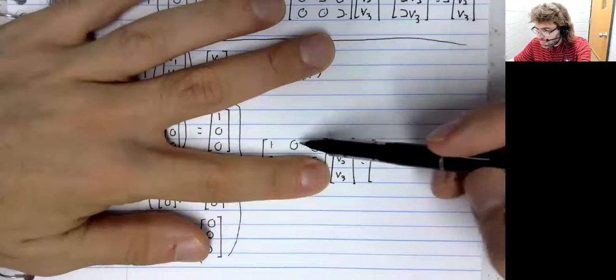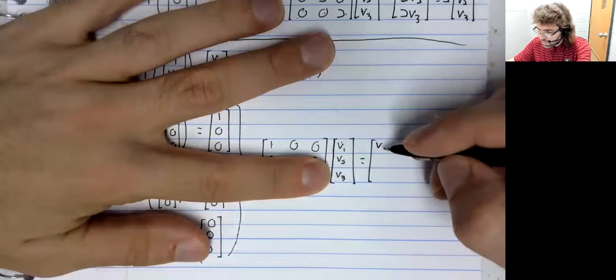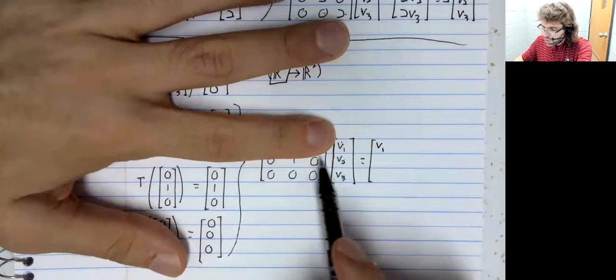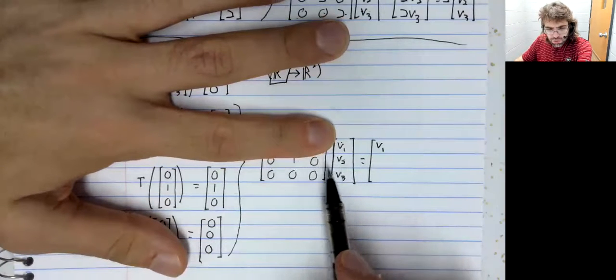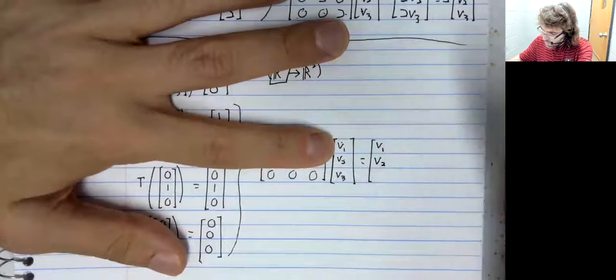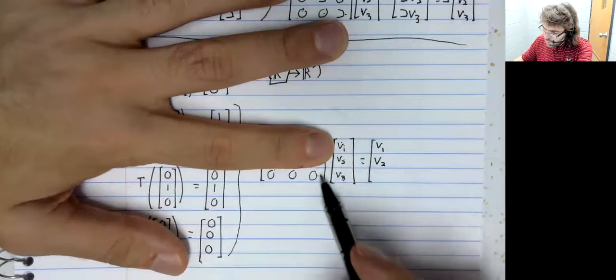One V1, zero, zero. Zero, one V2, zero. Zero, zero, zero.